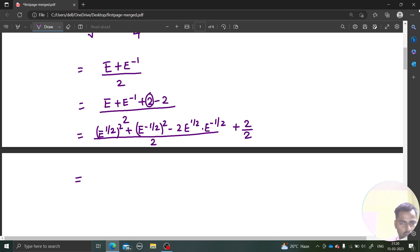This 2 by 2 is 1, and this is nothing but e power half minus e power minus half whole square divided by 2. A square plus b square minus 2AB. Now, e power half minus e power minus half in the beginning I told that is delta, the central difference operator. This is delta square divided by 2 which is nothing but your LHS.